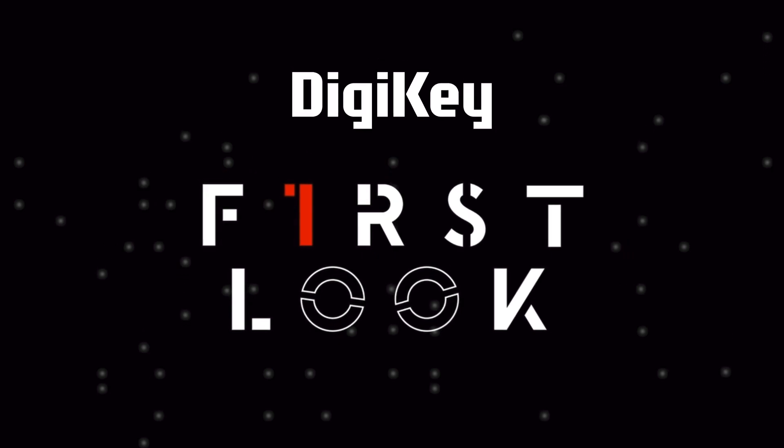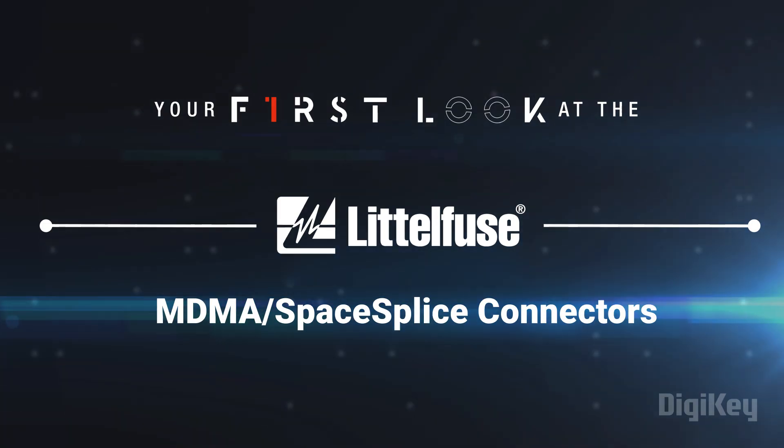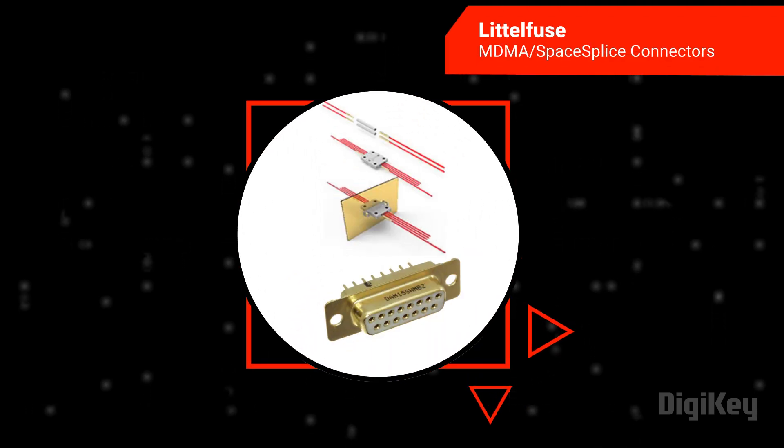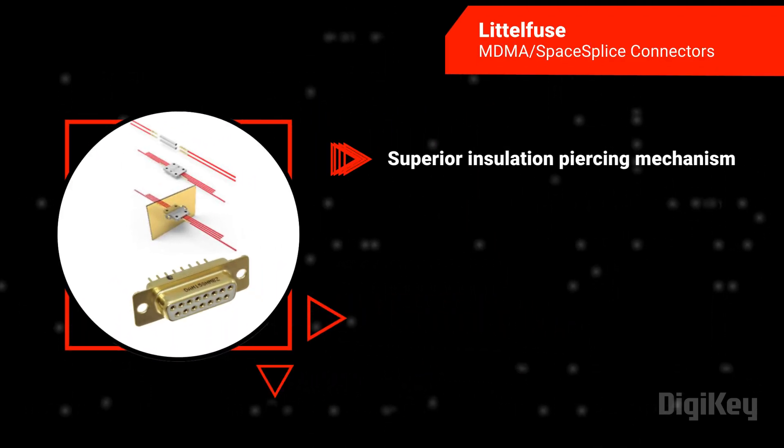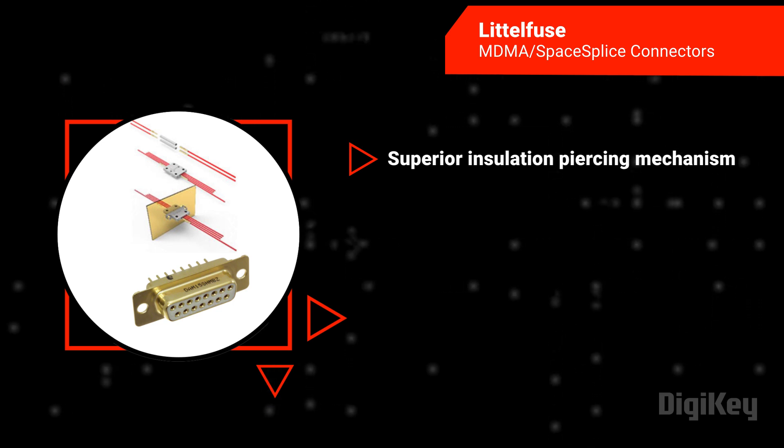Belden's RevConnect Field Termination RJ45 connectors provide a cutting-edge solution for efficient cable management in harsh industrial environments. These connectors boast a superior insulation-piercing mechanism, ensuring reliable and uninterrupted network performance.